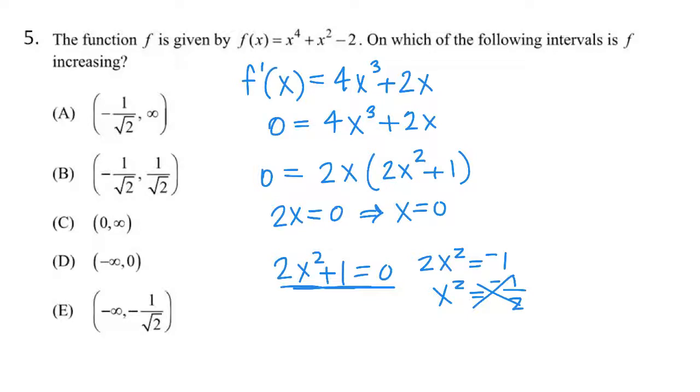So what answer choices could I probably start getting rid of? A, B, and E, right? Because you know the only value that you have a possibility is going to be 0. Now, how do I know what's going on at 0?